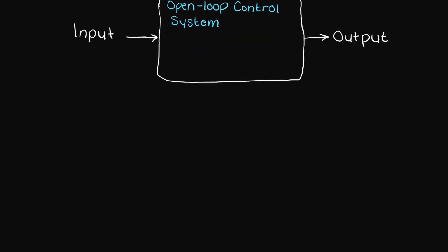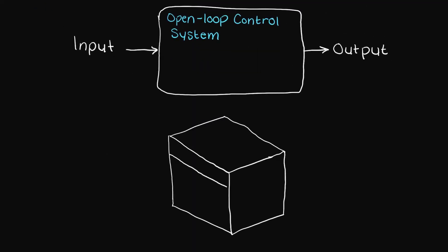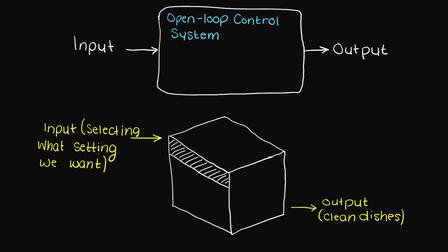Let's think of a few examples to ensure that we understand. Let's think of a dishwasher. We turn the dishwasher on and it will produce the same result every single time. This is a great example of an open loop system.